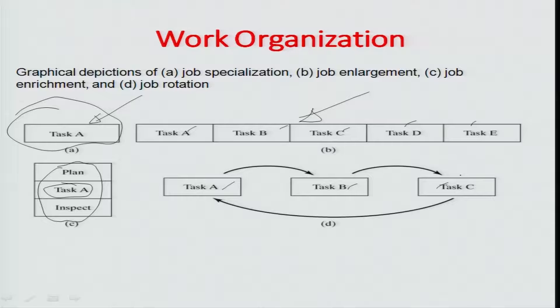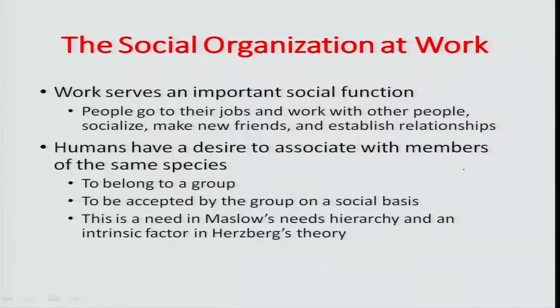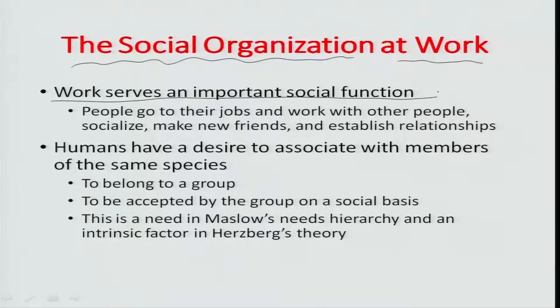When we talk about McGregor's Theory Y — that workers are generally positive and need to be sufficiently motivated — job rotation gives a positive impetus because it helps develop more ownership privileges and more decision-making abilities among the smallest stakeholders of any work system, which is very motivating in nature. These are the alternatives available to job specialization. Let us now look at what the social aspect of an organization does at work — the social organization at work.